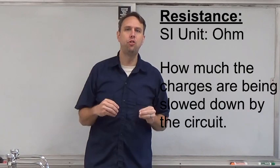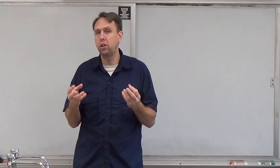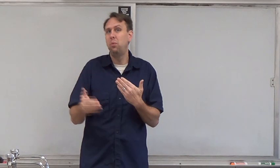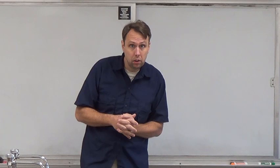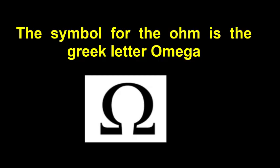The third thing we need to define is resistance. That's how much the wire is slowing down the flow of charges in the circuit. Or it doesn't have to be a wire. But whatever is in the circuit trying to stop the electrons from moving or resisting their flow, we call that resistance. The SI unit for resistance is the ohm, named after George Ohm, who did some work with the relationship between voltage, current and resistance.